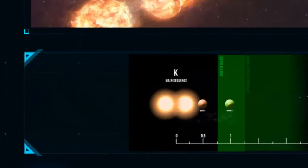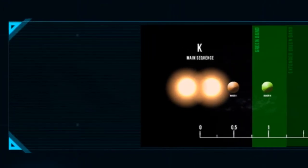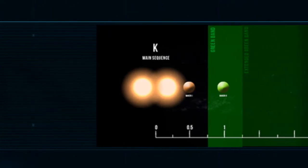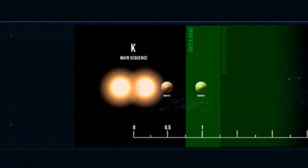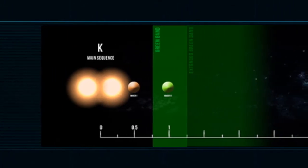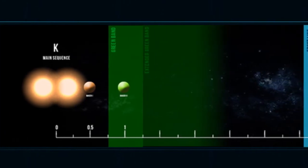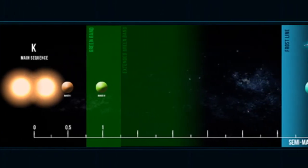Baker is a binary system consisting of two K-type main sequence stars. The stars are surrounded by a relatively desolate collection of planets that range from completely uninhabitable to barely habitable. A Kovalex shipping hub and a largely automated mining outpost are the sole bastions of civilization in the region.